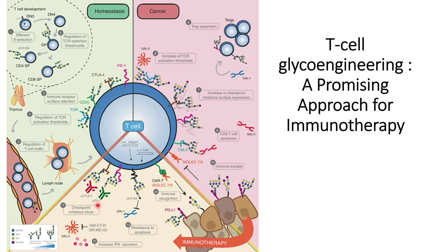We can also use antibodies against immune checkpoint receptors such as CTLA-4 and PD-1 to prevent inhibition of T cells, though this may cause autoimmune side effects by reducing T cell modulation. Another approach is to inhibit galectin-3, which reduces the activation threshold and leads to more efficient T cell functioning by increasing IFN and cytokine secretion that helps detect and act against tumor cells.